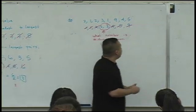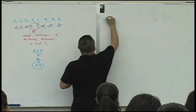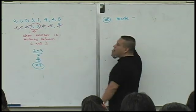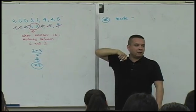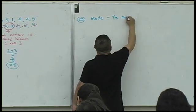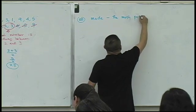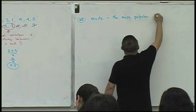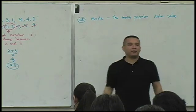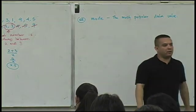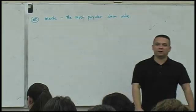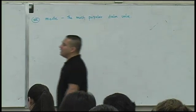The last center is called the mode. Do you guys know what the definition of the mode is? The mode is the most popular data value. Remember we talked about this popular thing before? Right? Being popular. All right. Let's look at these data sets.